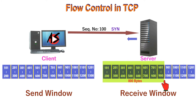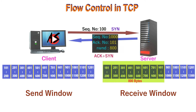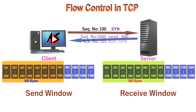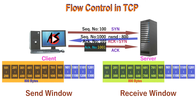The second segment is from the server to the client — an ACK plus SYN segment. It uses acknowledgement number 101 to indicate it expects to receive bytes starting from 101, and uses sequence number 1000. It also announces that the client can set a buffer size of 800 bytes. The third segment is the ACK from the client to the server, completing the connection establishment.